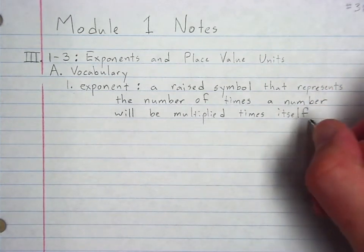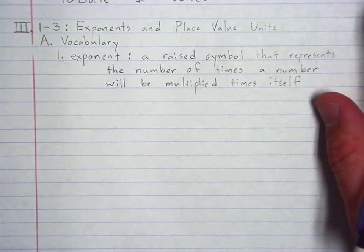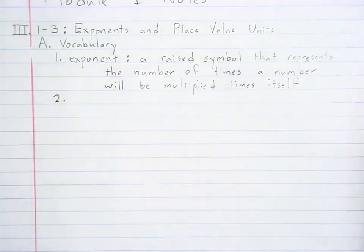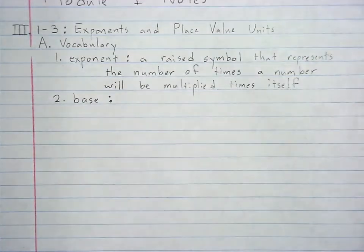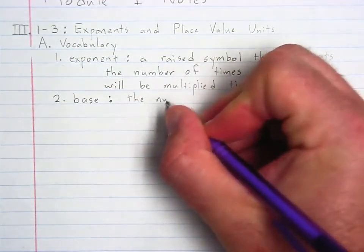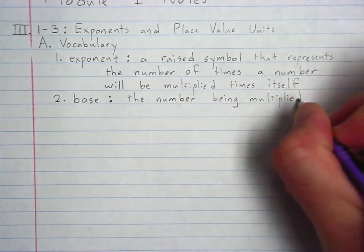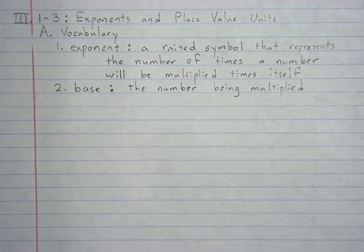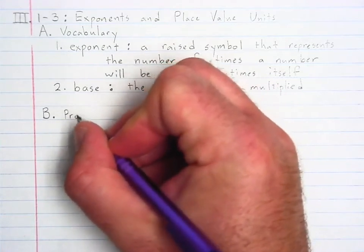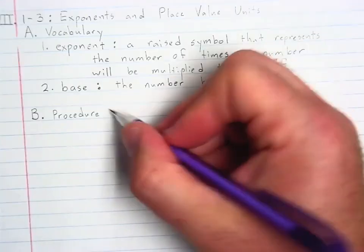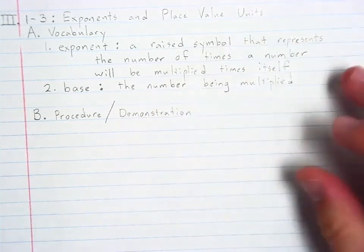Many students try to multiply the original number times the exponent — that's not what we're doing. Let's do one more vocabulary word and then I'll show you exactly what I mean. While we're working you may hear me refer to the base. The base is just the number being multiplied. There's not a whole lot of process for this lesson, so it's actually going to be more about demonstration.